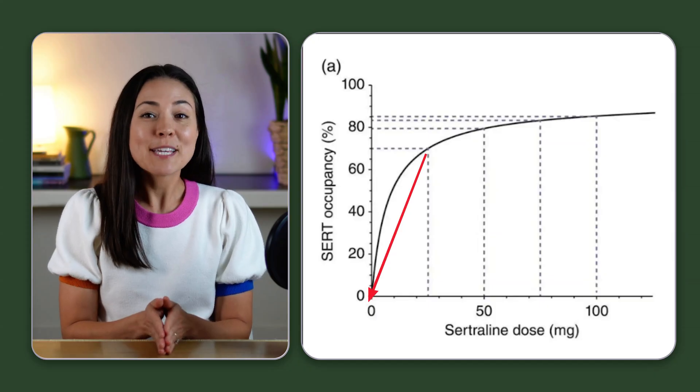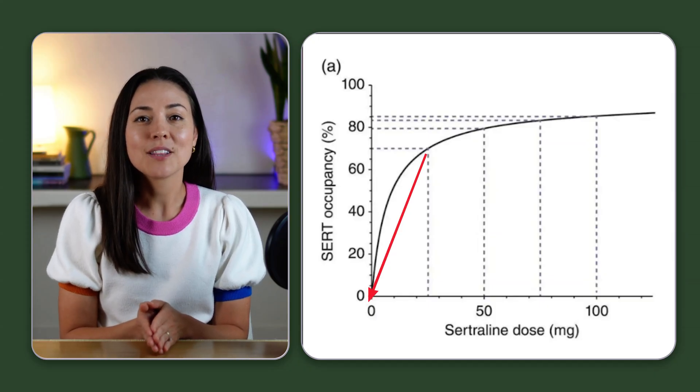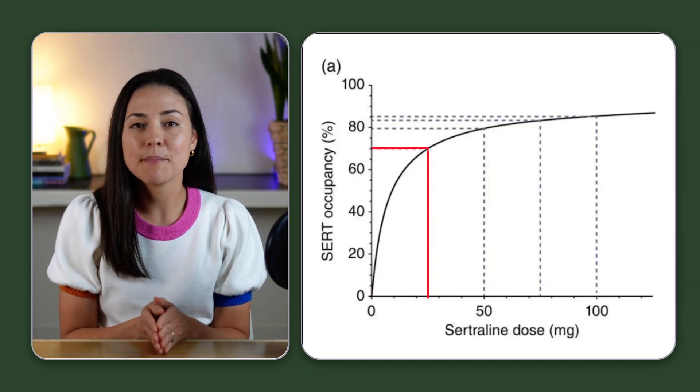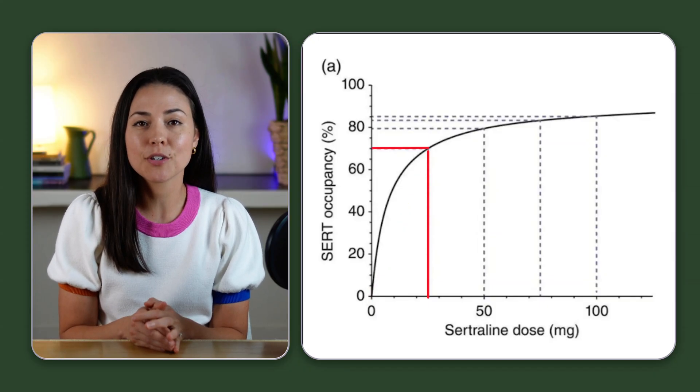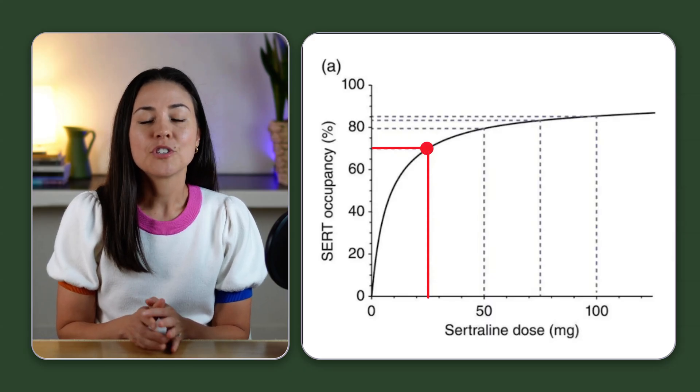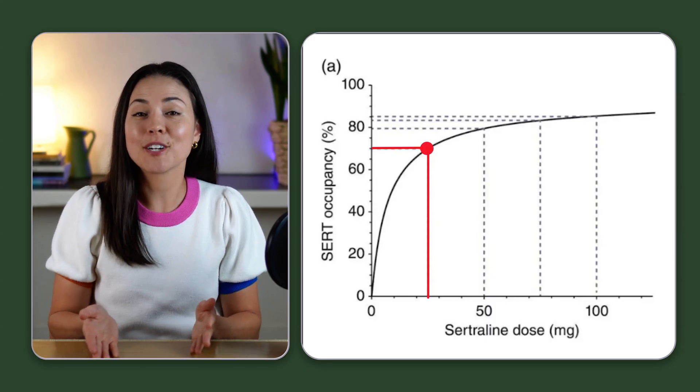Notice how the line shoots up steeply to the right at the beginning. So at a low dose of just 25 milligrams, about 70% of serotonin transporters are already occupied. The drug has what we call high affinity for its target.